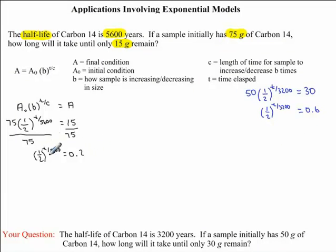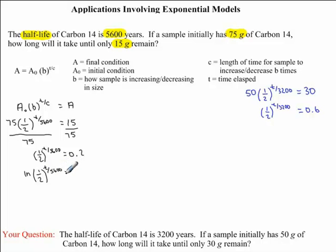Now we've run into a problem: our variable T is an exponent, so we can't isolate it directly. So what we want to do is take the ln of both sides. We'll have ln of one-half to the exponent T divided by 5,600, equal to the ln of 0.2. Thinking back to our properties of natural logarithmic functions, we can rewrite this without the exponent by taking the exponent and placing it in front of the ln — this gives the exact same numerical value.